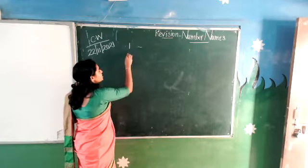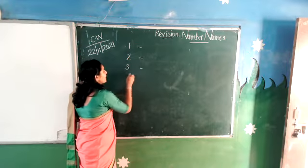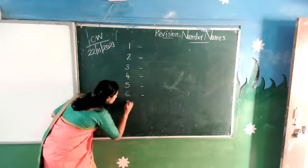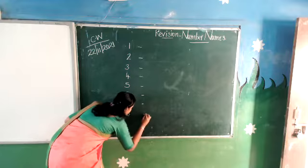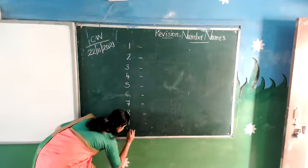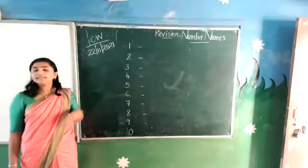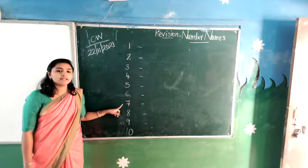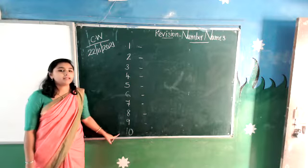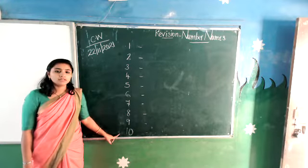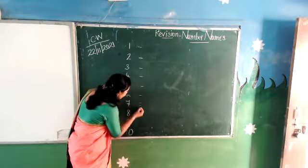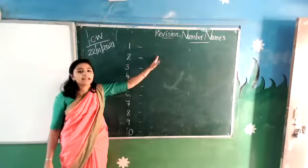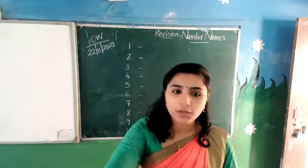Number 1 dash, 2 dash, 3 dash, 4 dash, 5 dash, 6 dash, 7 dash, 8 dash, 9 dash, 10. Numbers from 1, 2, 3, 4, 5, 6, 7, 8, 9, 10. In front of these numbers you should write the number name — the name of these particular numbers.